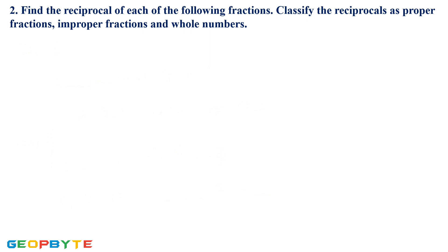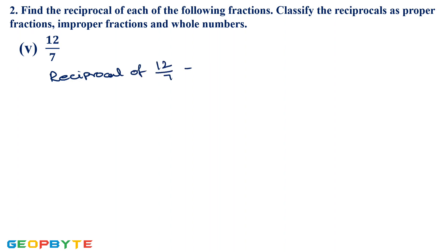Next, fifth one: 12/7. First we find the reciprocal. Reciprocal of 12/7 is 7/12. Here the denominator is greater than the numerator, so it is a proper fraction.